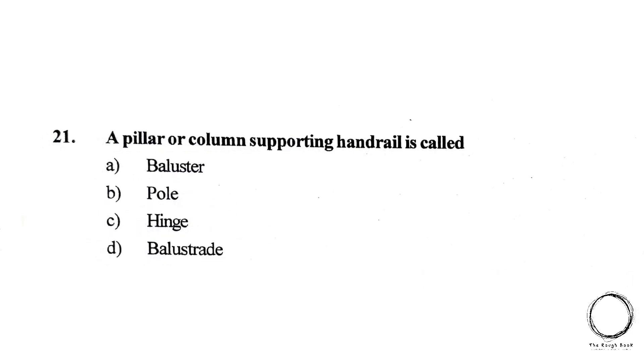Moving on to the next question. A pillar or column supporting a handrail is called A. Baluster, B. Pole, C. Hinge, D. Balustrade. The right answer is A, Baluster.